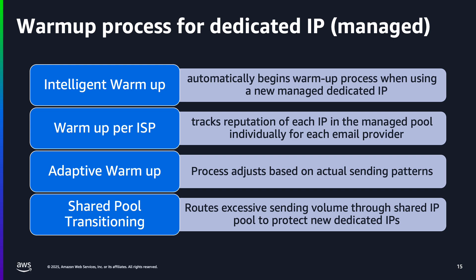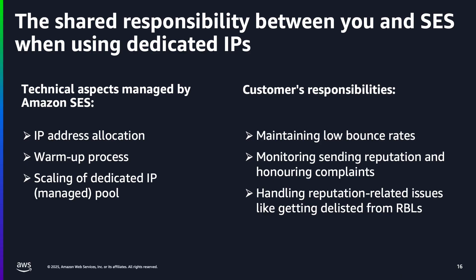Please note that enforcement by mailbox providers and routing to inboxes are still dependent on additional areas of delivery focus like content, list acquisition policies, retention policies, and overall engagement from your audience. While Amazon SES handles the technical aspects of managing and scaling the dedicated IP addresses in the managed IP pool, the responsibility for maintaining a good sending reputation is entirely the customer's responsibility. SES automates tasks like IP address allocation, warm-up, and scaling to optimize the use of the dedicated IPs. However, you are still responsible for maintaining low bounce rates by keeping your mailing list up to date and sending only to valid email addresses who asked for your emails, monitoring your sending reputation, and handling any reputation-related issues such as getting delisted from reputation block lists (RBLs) by filling out the delisting forms provided by most mailbox providers. It's important to understand that the managed aspect in dedicated IPs managed refers to the technical infrastructure management, not the complete handling of your email sending reputation.